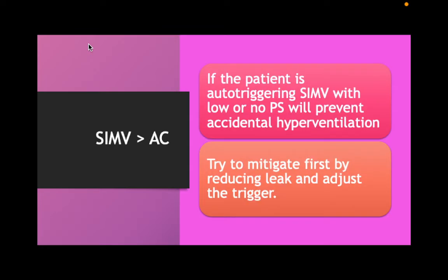Then we have the question of AC versus SIMV. If the machine thinks the patient is breathing more than they actually are, is it better for the machine to give a full breath or just a small breath? If it's an accidental breath, we don't want it to give a full breath. So for this reason, sometimes we prefer SIMV, even without pressure support, because if there are accidental breaths, we don't risk hyperventilating the baby and doing damage.